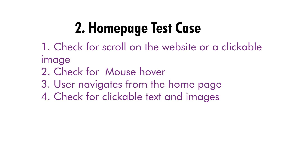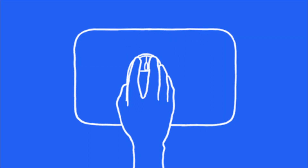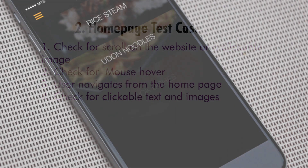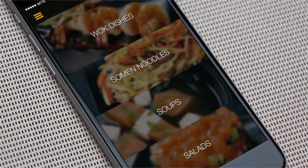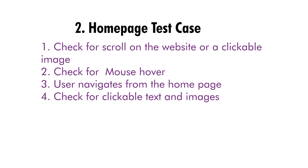A few home page scenarios to test: if there is a scroll or clickable image, check if it is working. If the scroll is automatic, check the interval between scrolls and evaluate the efficiency. Will a mouseover lead to another image? Will a click take the user to the relevant page and product? Check if the user navigating from the home page can move to another part of the website without friction, and verify that clickable text and images are working.